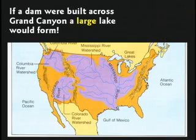If you built a 600-foot-high dam across New Orleans, Chicago would be on the beach of a giant lake that would form — that whole purple area would be under water. Grand Canyon, as we mentioned, is obviously a breached dam.